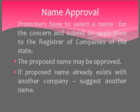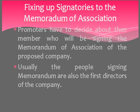After that, name approval. The promoter has to select a name for the concern and submit an application to the Registrar of Companies of the state. The name should not be objectionable and the proposed name may be approved. If the proposed name already exists with another company, then the promoter has to suggest another name.